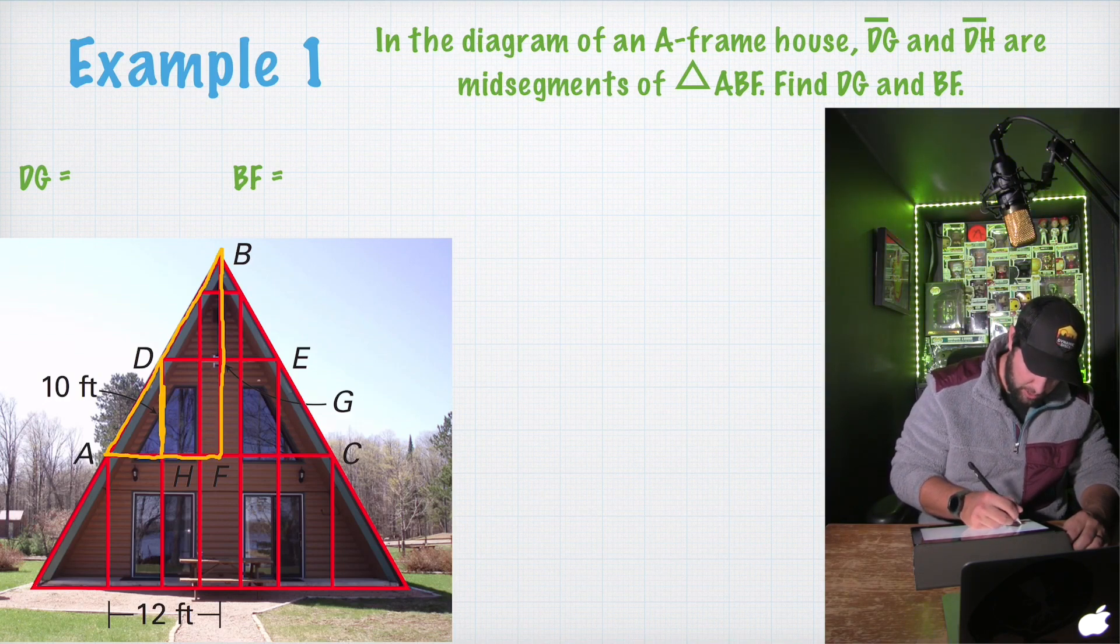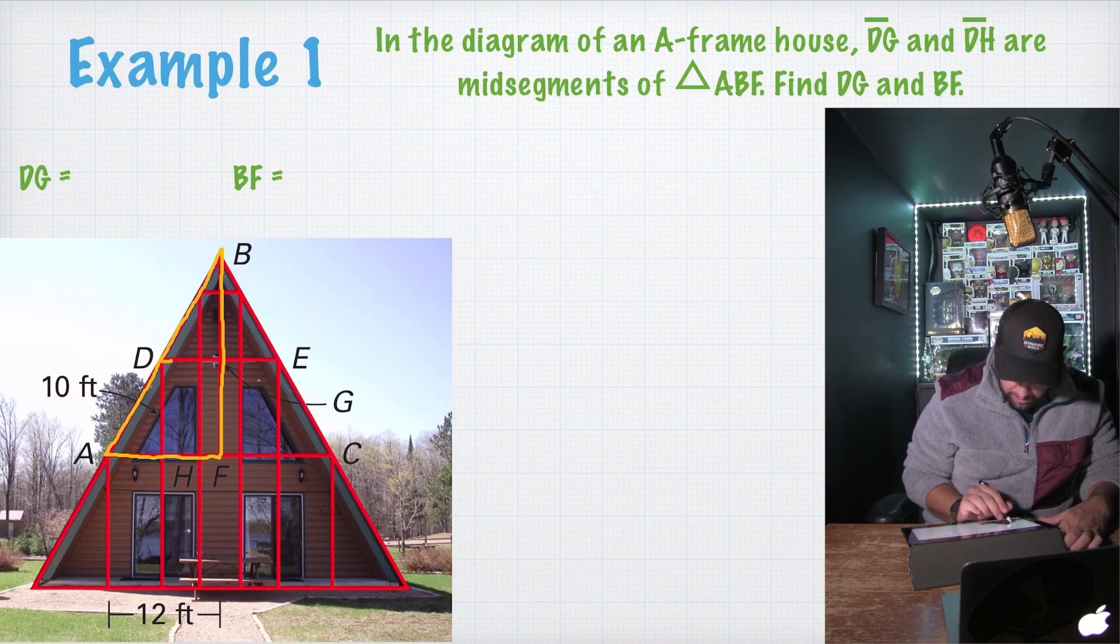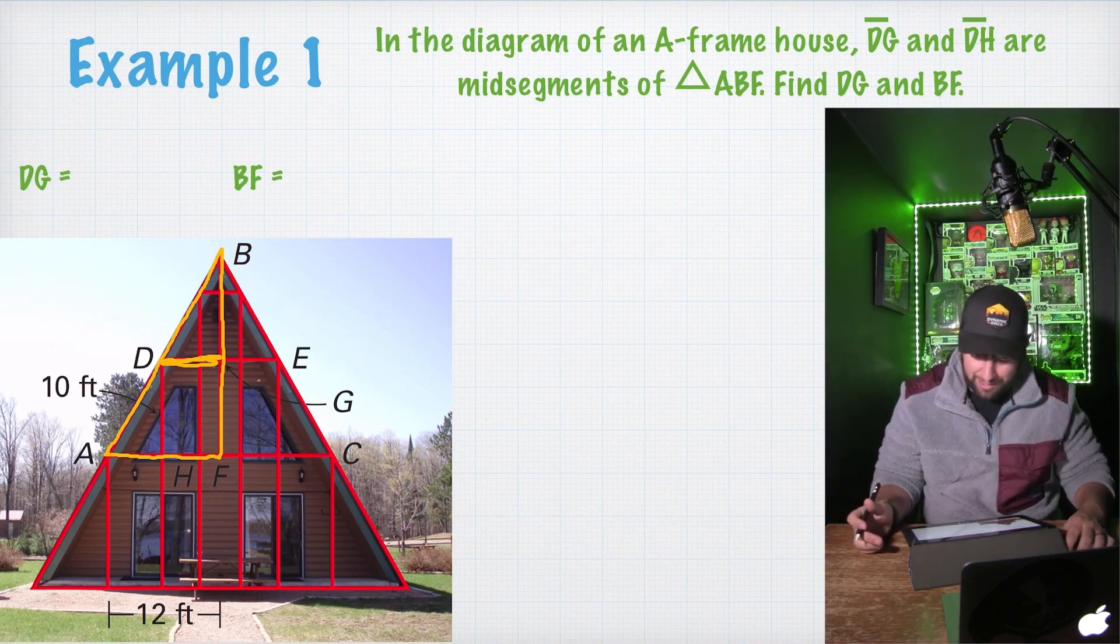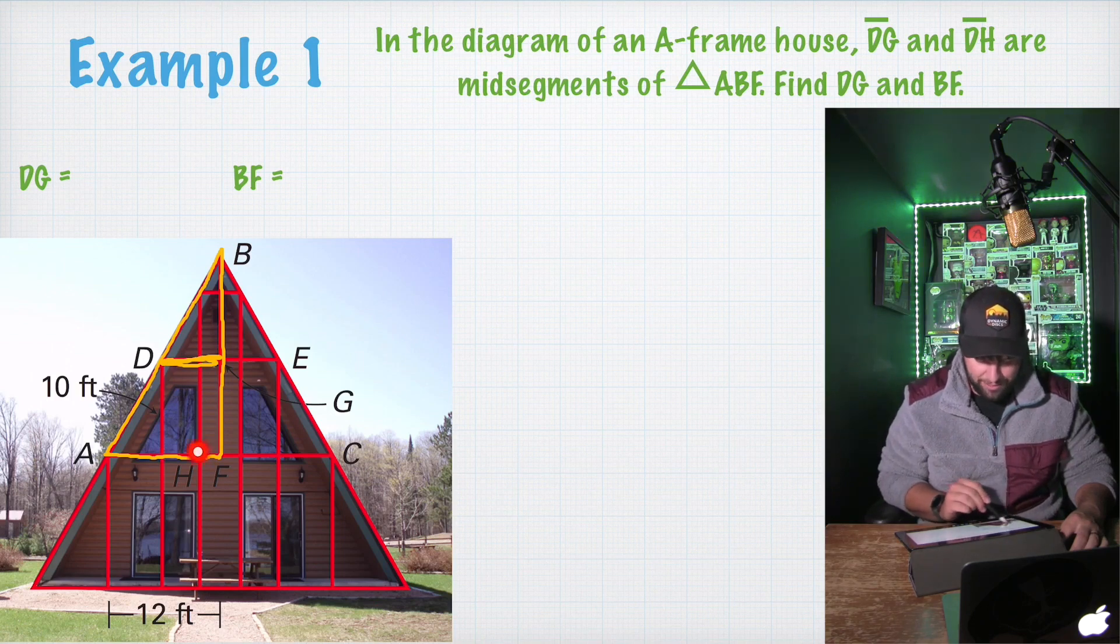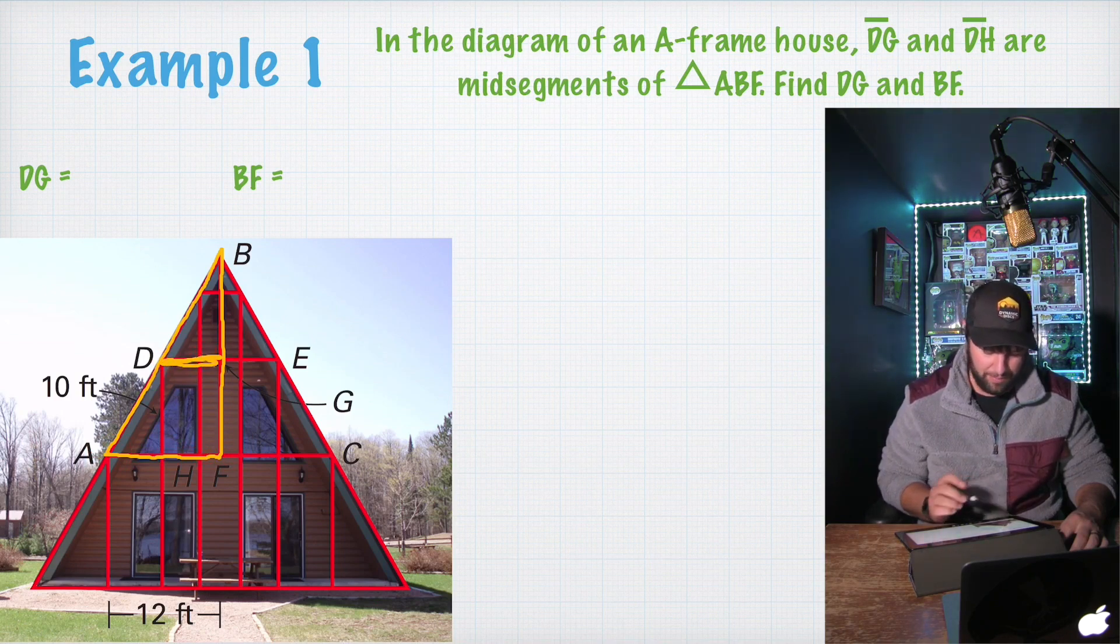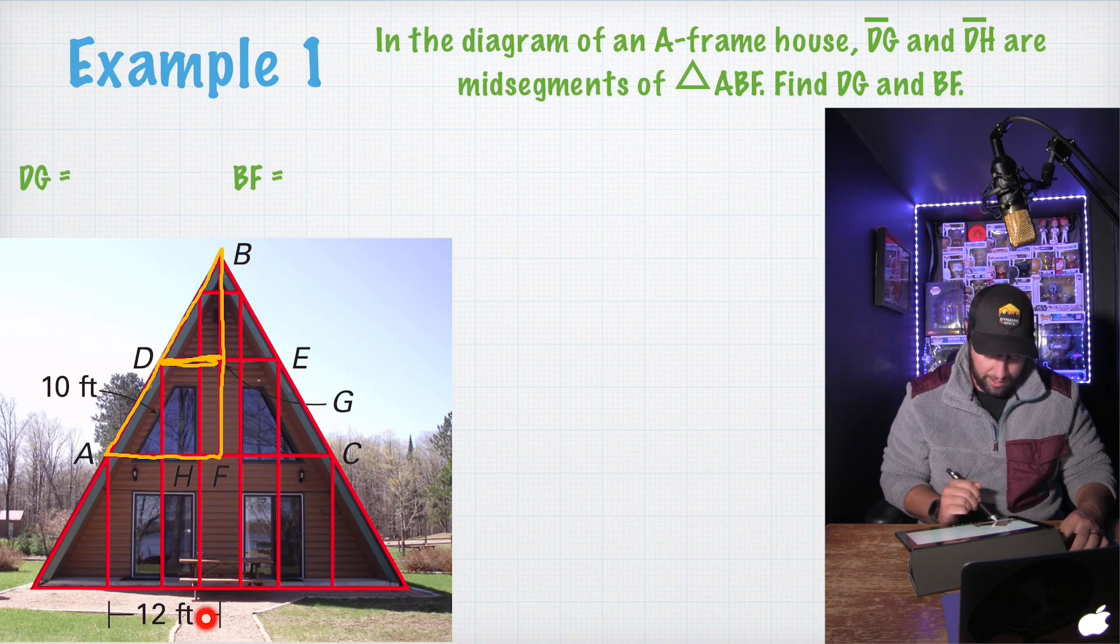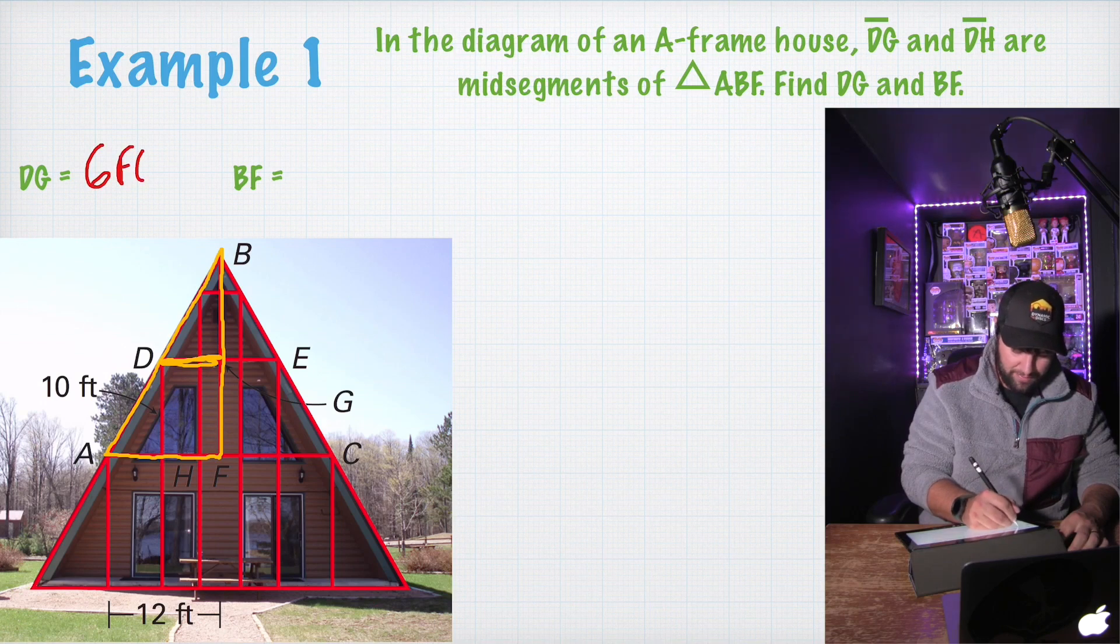They want us to find DG and BF. So I'm going to go ahead and highlight this triangle in yellow because it's way easier to see over this house. So here's our triangle. And we're looking at BF, which is the long side here. And we are also looking at DG. By the way, whenever I hear DG, instantly think of disc golf. Love it. Wish I was out playing right now. Anyways, so to find the length of DG, we know that it's going to be half the length of the side it's parallel to because DG is the mid-segment.